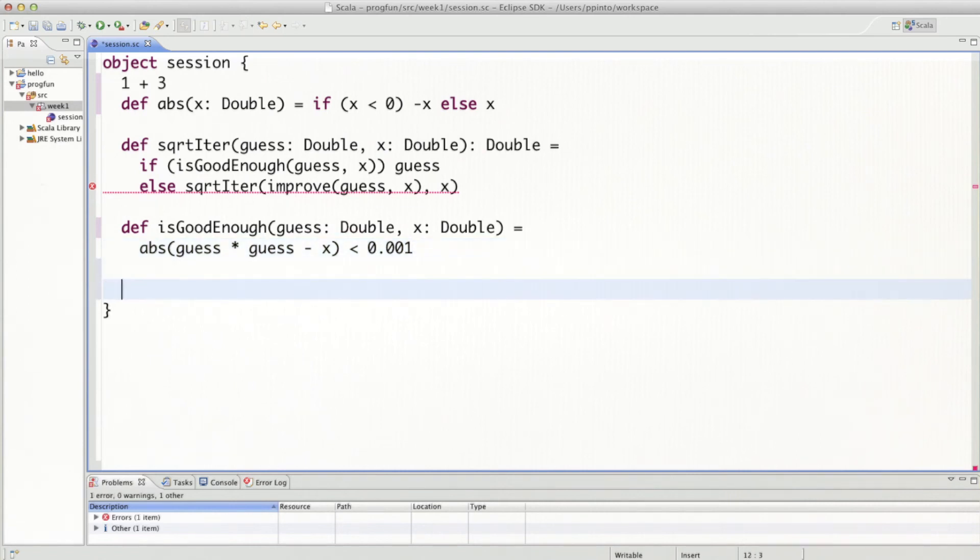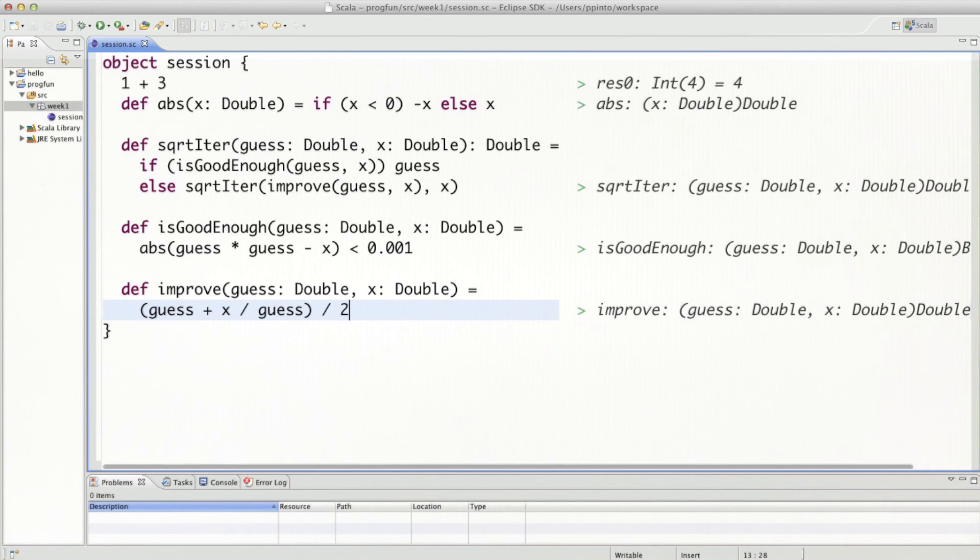The second function we need to define is improve. And that's now the core of the Newton method. To take a guess and an x, and to improve the guess, what do we do? We say we need to take the mean of the value of the current value of guess and the quotient of x divided by guess. So, to take the average, we would first sum the two values and then divide by two. Good.